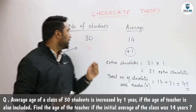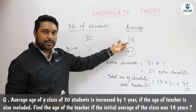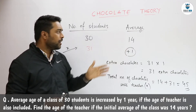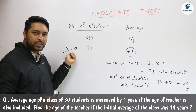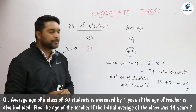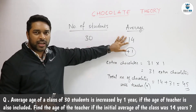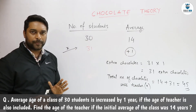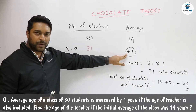There are 30 students in the class and their average age is 14 years, meaning each of the 30 students has 14 chocolates. When the teacher comes, the average increases by 1 and we have to find the age of the teacher — that is, how many chocolates the teacher brought. When the teacher sees that each student has 14 chocolates, she will also keep 14 chocolates with herself.